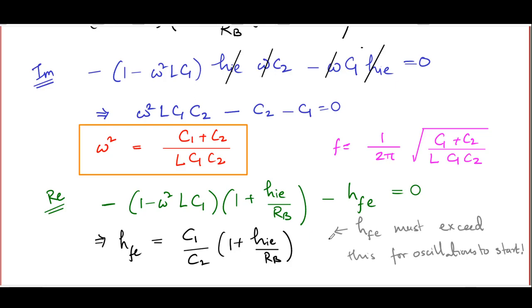Since RB is typically large in most circuits, the right-hand side (C1/C2)/RB is small, so this condition on the transconductance GM is easily satisfied in most situations. The FET-based Colpitts oscillator thus also oscillates at the predicted frequency, confirming the general tuned oscillator analysis.